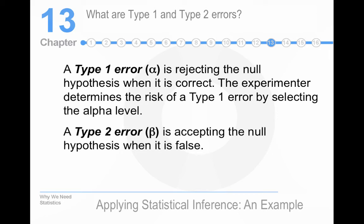However, by decreasing your chances of a Type 1 error, you increase your chances of a Type 2. And, vice versa. So, a Type 2 error is,